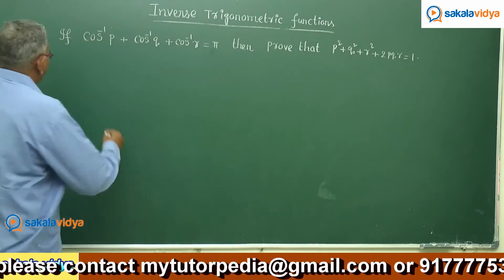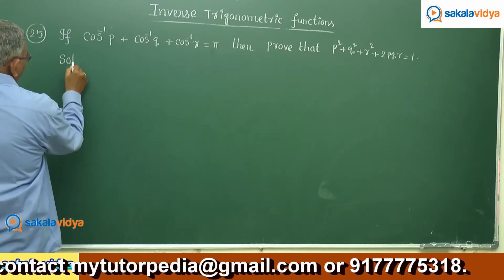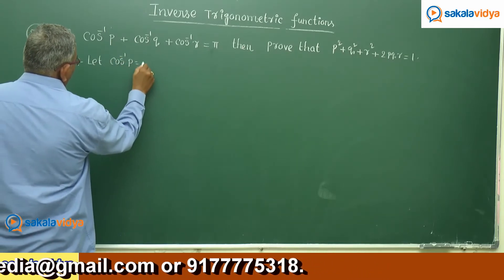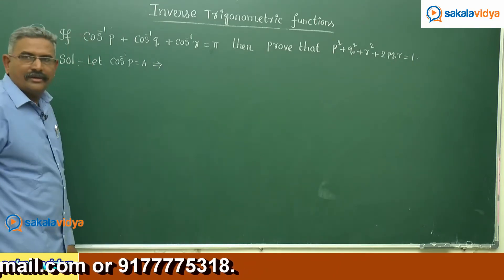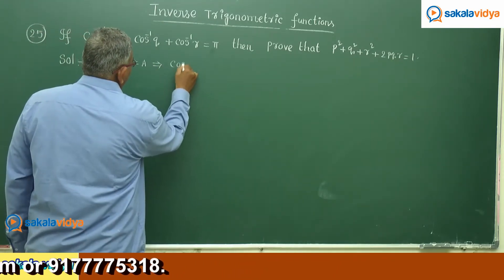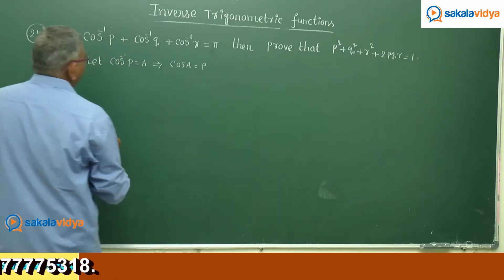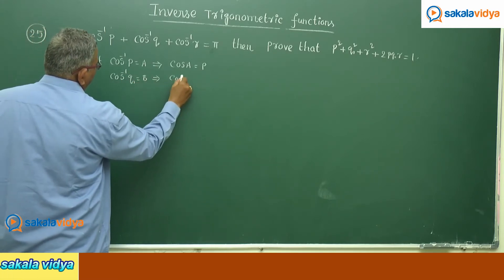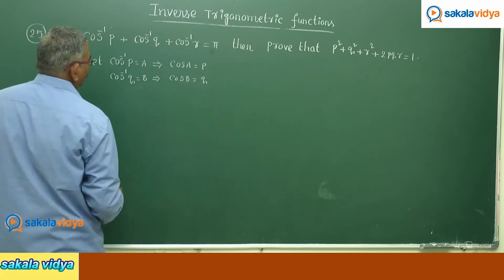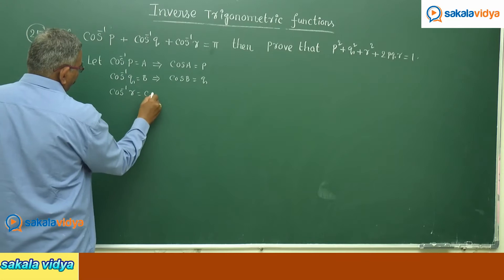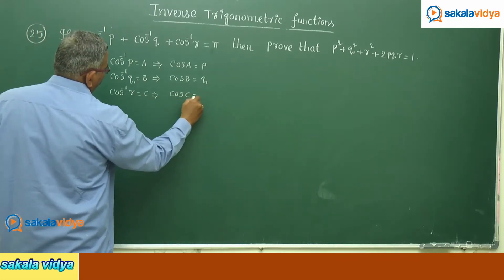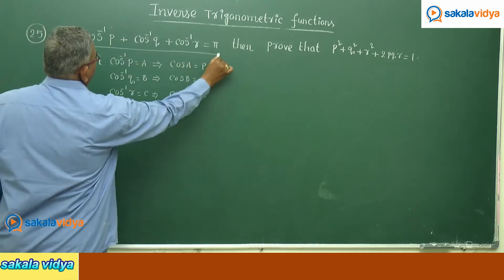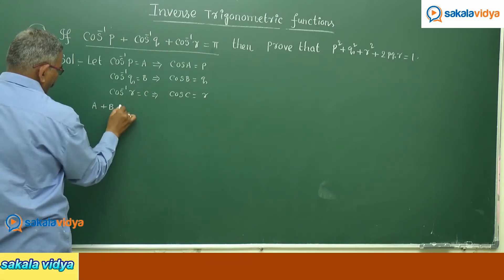Let us follow the second method. Let cos⁻¹p = a, cos⁻¹q = b, and cos⁻¹r = c. Therefore cos a = p, cos b = q, and cos c = r. This gives us a + b + c = π.